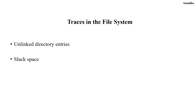Next are traces in the file system. First is unlinked directory entries — once a file is deleted, the path of that file becomes orphaned but still remains on the disk, and may contain information regarding timestamps and data fragments of the deleted file. Second is slack space — unused space or area on the storage device that may hold fragments of previously stored data.